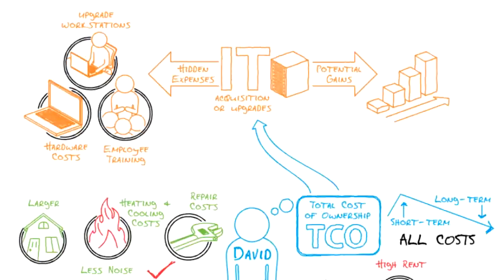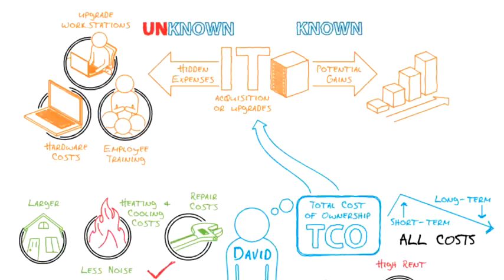TCO can be a challenging analysis to perform because it requires businesses to not only accurately estimate the cost of known problems, but also predict unknown problems that might be discovered later. TCO analyses help businesses understand risk. In David's example, he knew that his home would likely require repairs that he would need to budget for, but he didn't know exactly which repairs these would be.